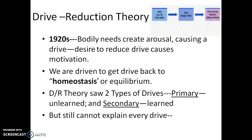In doing so, we are driven to get back to a condition of homeostasis or equilibrium or balance when it comes to a particular drive. Drive reduction theory sees two types of drives. First, primary drives — those are unlearned, similar to instincts, and are found in all animals. Then there are secondary drives — things that we learn that begin to motivate us, things like money, grades, success, and so forth.